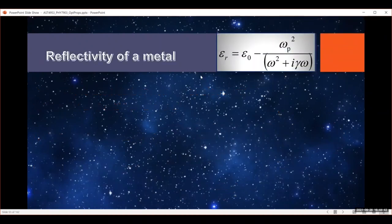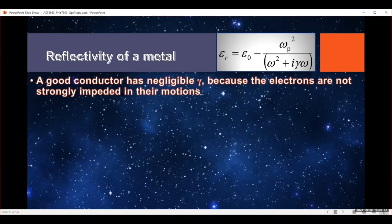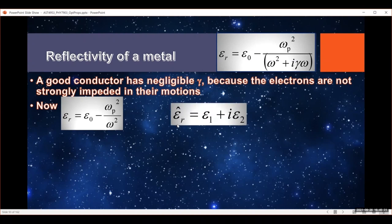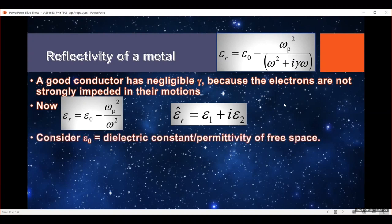Let's look at this in terms of what it does for the reflectivity of metal. Using that same equation — if we've got a good conductor, the gamma term (the damping due to friction on the electrons) becomes negligible, so that term just disappears. Now we've got an equation that relates the relative permittivity to the free-space permittivity, the plasma frequency, and the frequency of light. Remember that the relative permittivity is a complex number with real and imaginary parts.